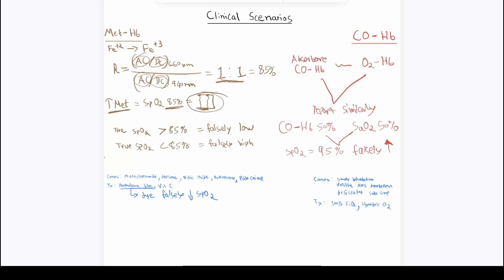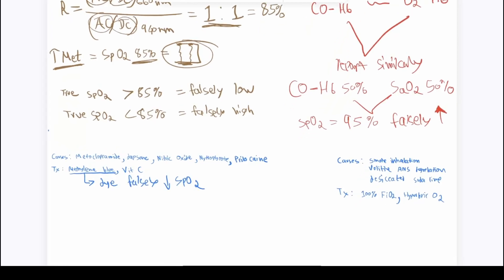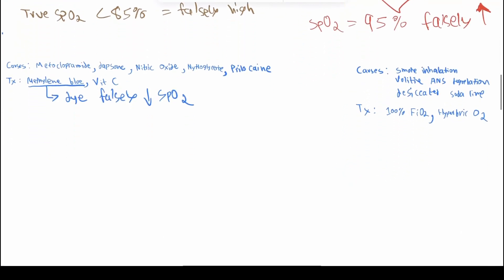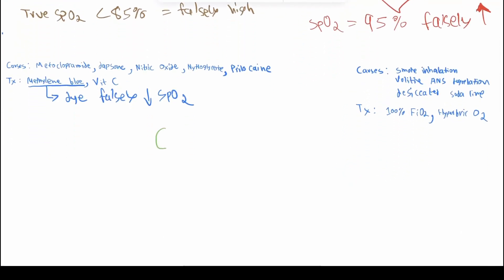Let's talk about the third most common clinical scenario that has to do with the pulse ox, which is cyanide toxicity. What happens? There is uncoupling of oxidative phosphorylation.